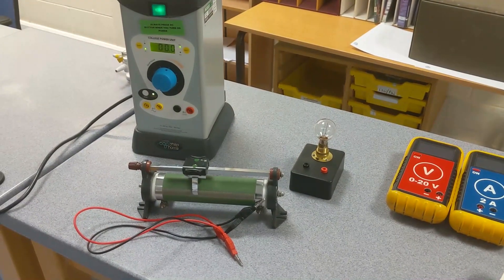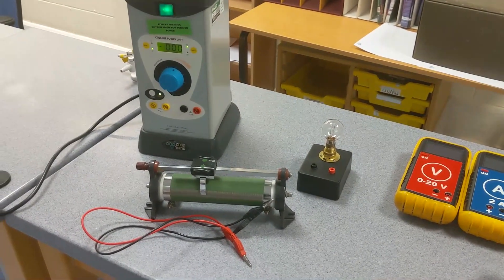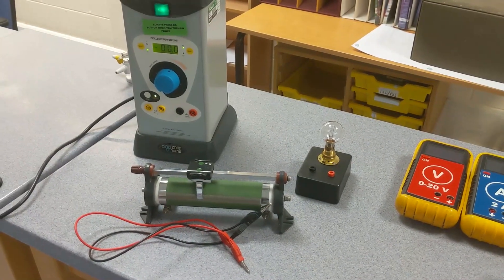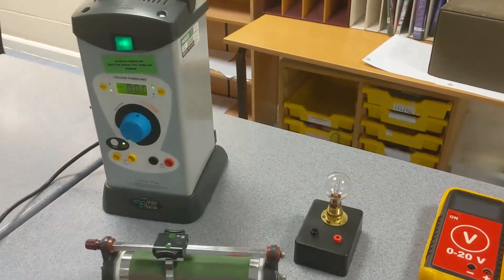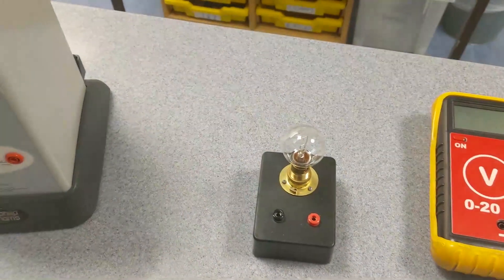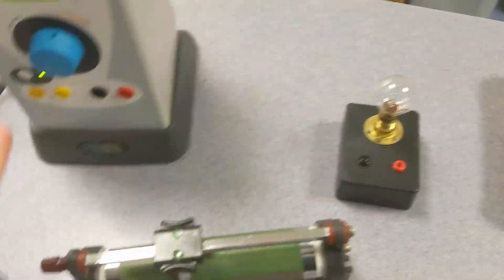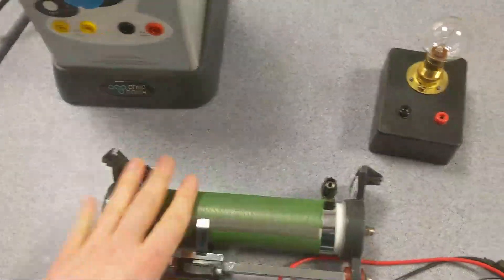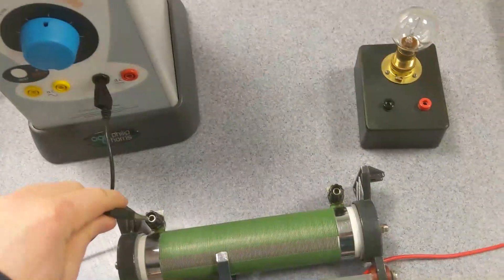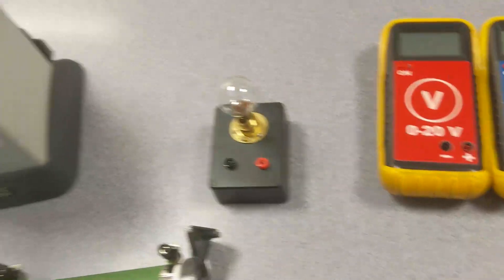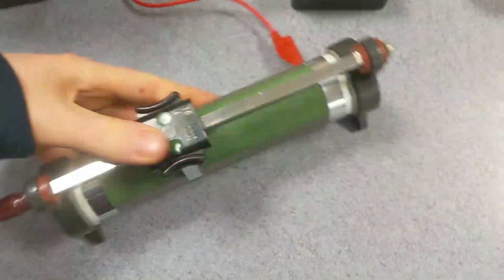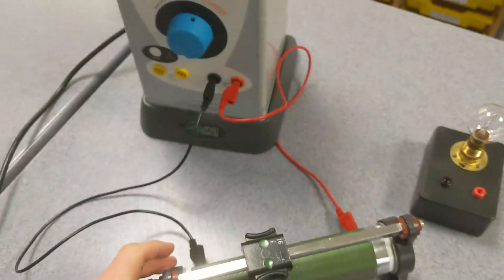Right, I thought I'd start by telling you my electricity joke, but it's pretty shocking. Right, here we've got an investigation to see what the current voltage characteristics are across a filament bulb. Now what we're going to set up is a potential divider circuit to allow us to vary voltage across the filament bulb.